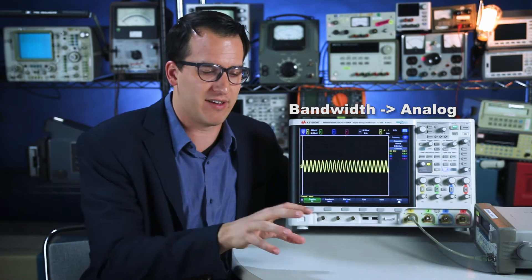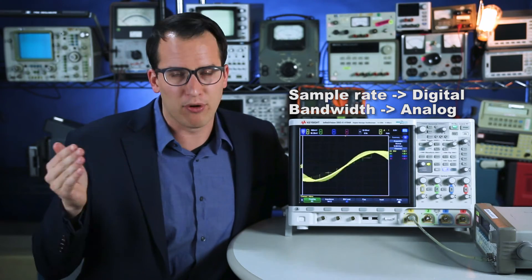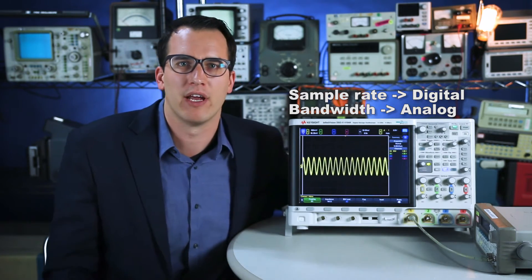When it comes down to it, bandwidth and sample rate describe two key fundamental portions of an oscilloscope. Bandwidth describes the analog portion, how fast the signal is it able to physically acquire. And the sample rate describes the digital side of the system, how fast is the digital portion able to sample the analog input from the front end.